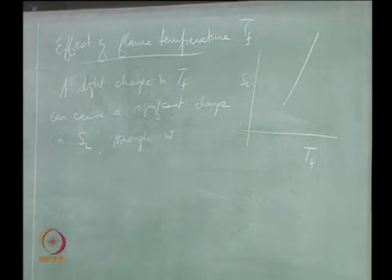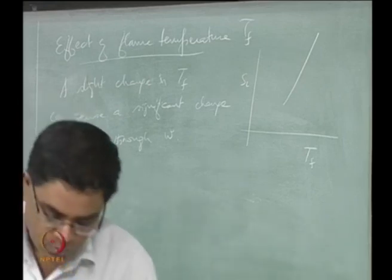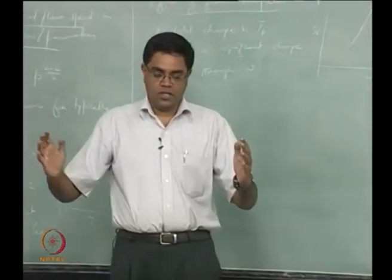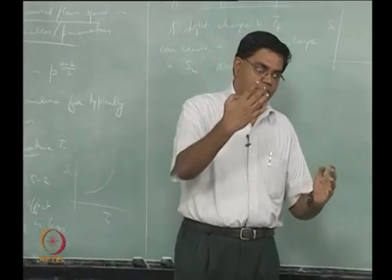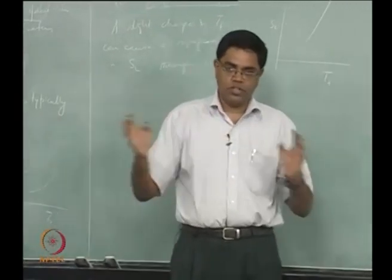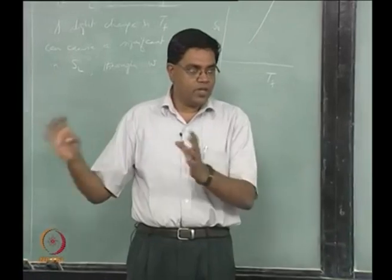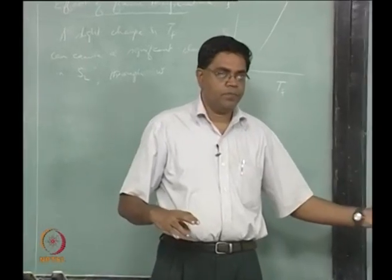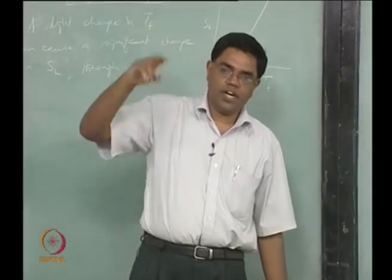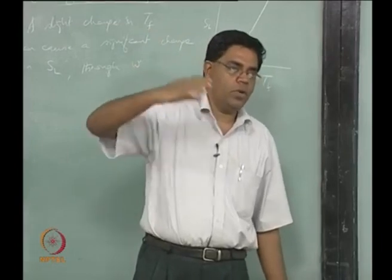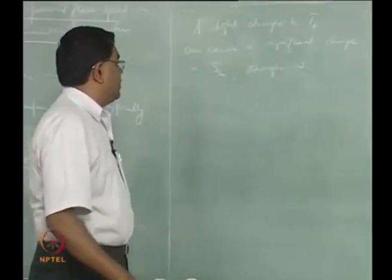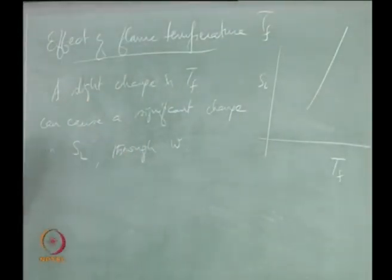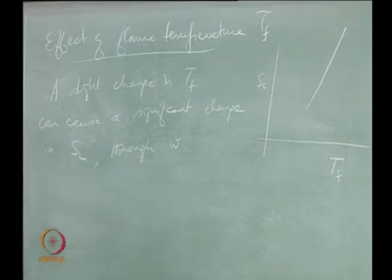Going back: when we first looked at the structure of the premixed flame, we said the reactants come in, the temperature rises, and goes to the reaction zone. For a gross order-of-magnitude balance, the reaction rate is evaluated at the flame temperature — we do not worry about the variation of reaction rate with temperature and just evaluate it at Tf directly. This is justified because as Tf changes, W changes, and as W changes, SL changes — there is a direct link, and we can see this justified experimentally.